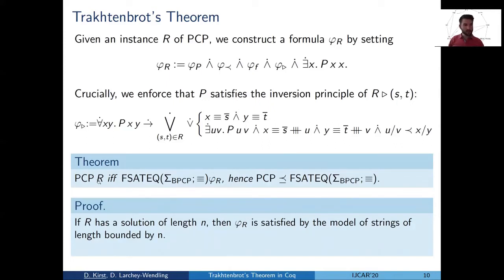From left to right, if R has a solution of length n, then we can look at the standard model of Boolean strings of length just bounded by n. This is certainly a finite model, and we can show that it satisfies all the axioms. And it still accommodates the solution. So we get that it satisfies phi R.